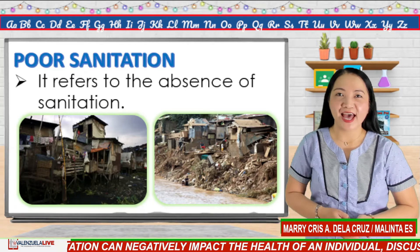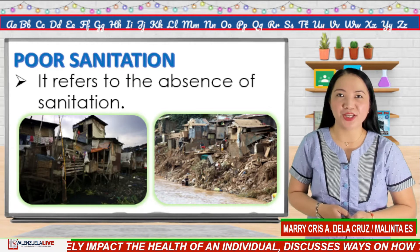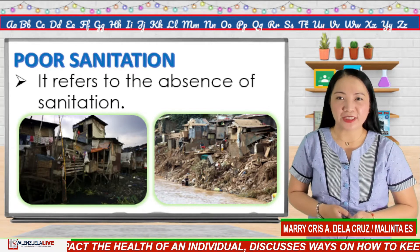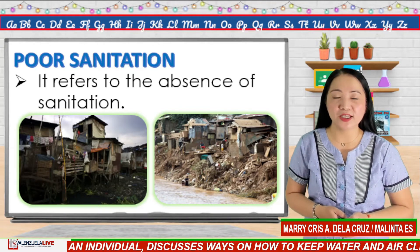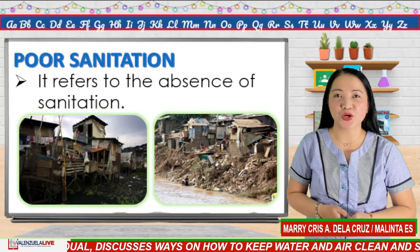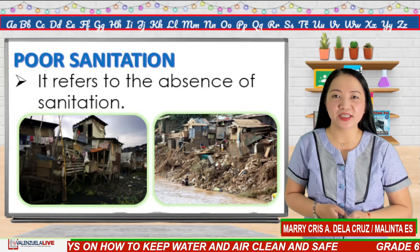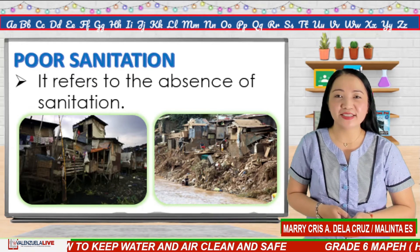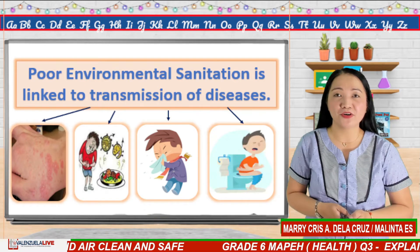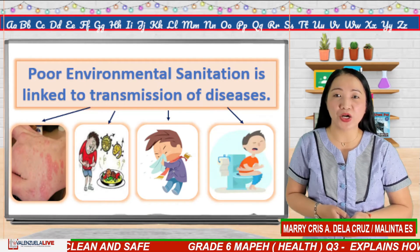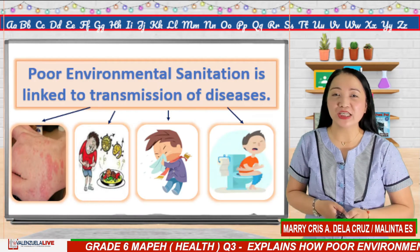Poor sanitation has negative impacts on the environment and eventually on the health of the people living in it. Poor sanitation is the absence of sanitation. People living in crowded city slums and villages with poor sanitation means that waste lies on the street, clogs drains, and creates an immediate local hazard. When this condition continues to exist, the health of the people suffers and diseases and disorders occur. Poor environmental sanitation is linked to the transmission of diseases.